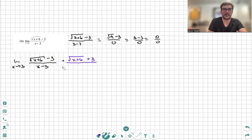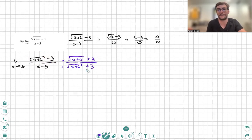So, what I multiply to the top, I multiply to the bottom, and the conjugate is going to be the same terms, so square root of x plus 6 and 3, with just the sign in the middle flipped.